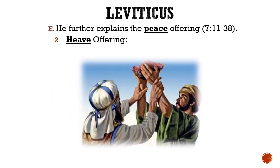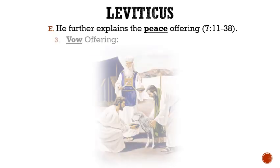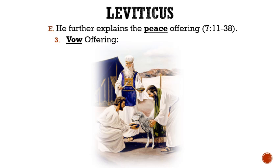The second was known as the heave offering. If it was a heave offering — meaning one just given or heaved to the Lord for no reason — then the one who offered the sacrifice was to eat the flesh the same day and not leave anything until the morning. The third and final peace offering was known as the vow offering. If it was a vow offering presented to the Lord after a promise was made, then the one who offered it could eat it that day and the next, but on the third day it was to be burnt up.